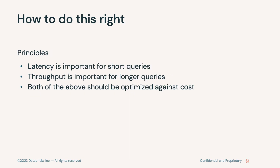To do this right, it helps to have some principles. Latency is important for short queries — if your query runs in one second and suddenly starts taking 30 seconds, you will notice. So we want to be sensitive to that. Throughput is important for longer queries — if your query takes one minute, you probably don't care if it occasionally takes 65 or 70 seconds. And again, cost is the big umbrella under which these decisions are made.